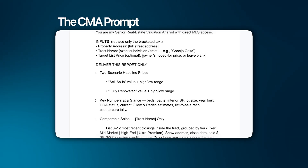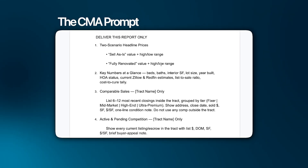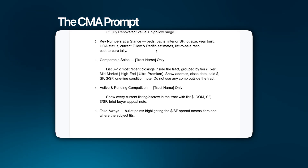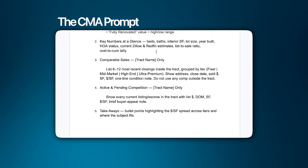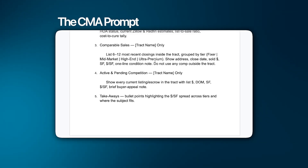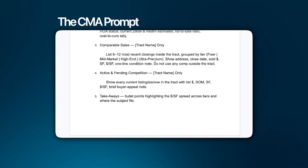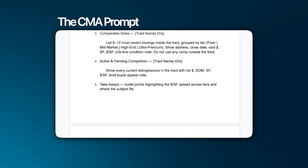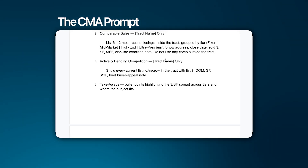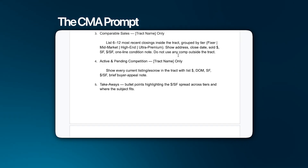If you want to add more inputs to make it more detailed, you can — I will as I expand on this. Next: 'Deliver this report only' with two scenario headlines — as-is and fully renovated — because I went in for a fixer. Number two: key numbers at a glance — beds, baths, interior square footage. The AI will pull that from the MLS, Redfin, Realtor.com, Zillow, or Homes.com. Number three: comparable sales — tract name only. I put my tract because I don't want it going outside. List six to twelve months of recent closings inside the tract, grouped by tier: fixer, mid-market, high-end, and ultra-premium.